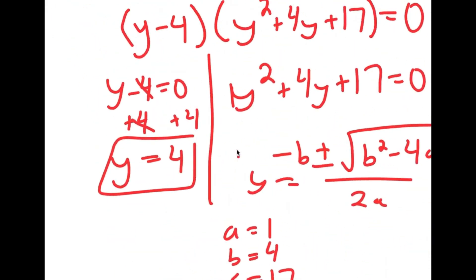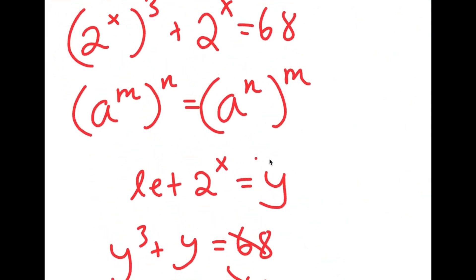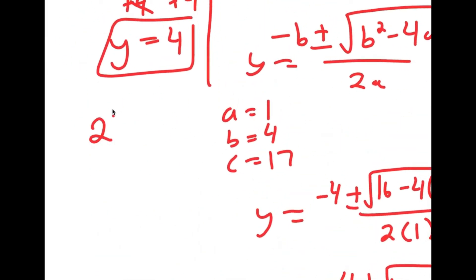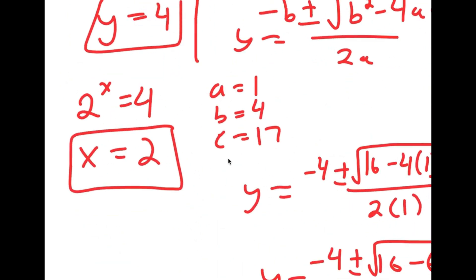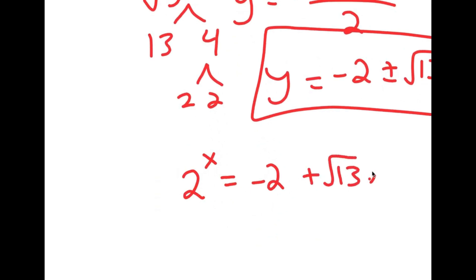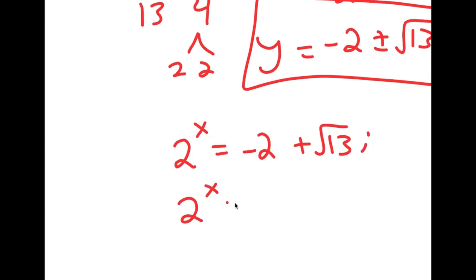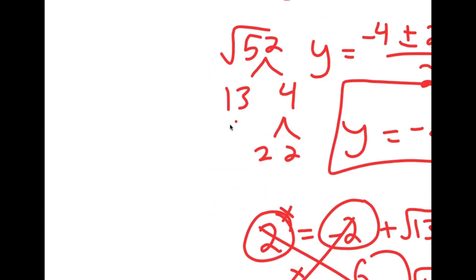Now that we know the values of y, recall that 2 to the power of x equals y. So 2^x = 4 gives x = 2, which is one solution. The other two values give 2^x = −2 + √13·i and 2^x = −2 − √13·i. Since we can't raise a positive number to a power and get a negative or complex number, there are no solutions for those. So x = 2 is the only solution.